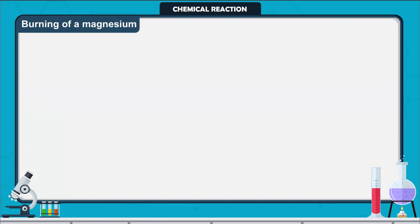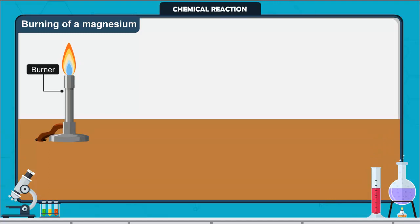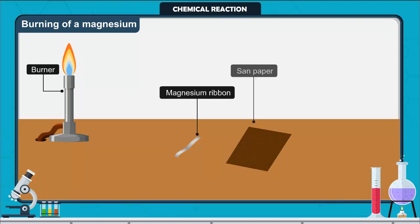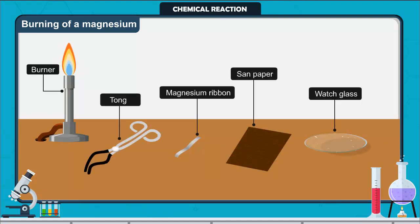Burning of a magnesium ribbon in air. For this experiment we need a burner, small part of magnesium ribbon, sand paper, a tong, and a watch glass.